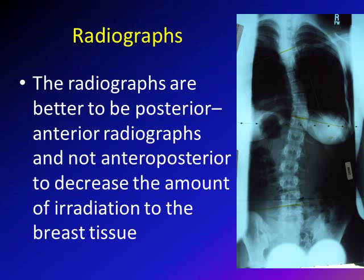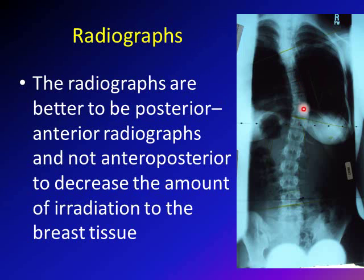You describe the curve by the convex side. In this case, it's a right thoracic curve, meaning the convexity is towards the right. Please note that the vast majority of adolescent idiopathic scoliosis curves are right thoracic — the thoracic curve is convex towards the right. If you get a curve convex toward the left, that's an indication to get an MRI. So: whole spine x-rays, posterior-anterior, right side on this side, left side on this side, and describe the thoracic curve by its convexity.